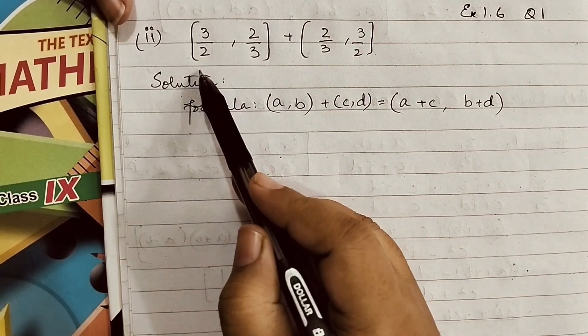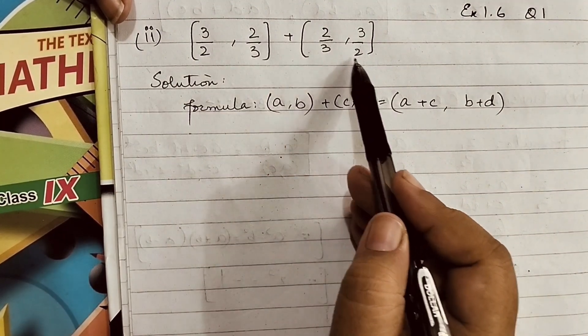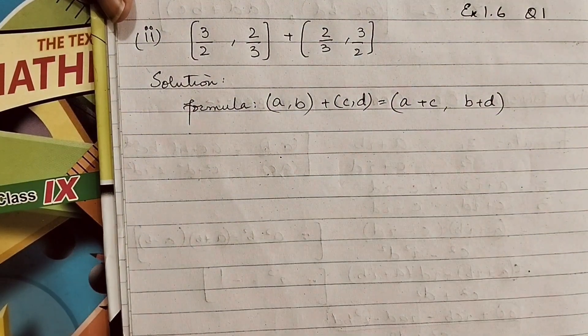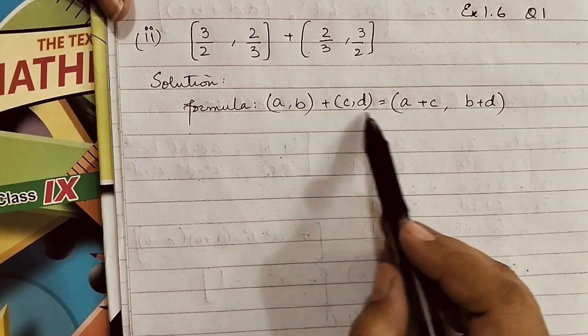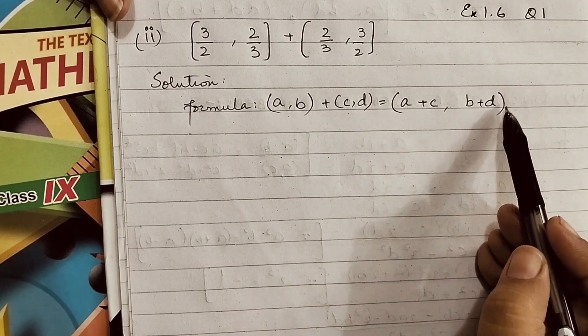Part 2 is (3/2, 2/3) as one number z1, and z2 is (2/3, 3/2). So we will perform the addition. When we add two complex numbers, we add a plus c and b plus d.